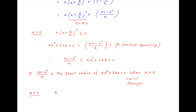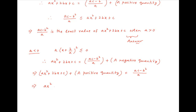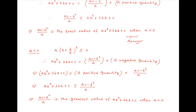This implies that a times x plus b upon a whole square is less than or equal to 0. And therefore the expression ax squared plus 2bx plus c can be expressed as ac minus b squared upon a plus a negative quantity. This implies that ax squared plus 2bx plus c plus a positive quantity is equal to ac minus b squared upon a. And this means that ax squared plus 2bx plus c is always less than or equal to ac minus b squared upon a, which implies that ac minus b squared upon a is the greatest value of the expression ax squared plus 2bx plus c when a is less than 0. And this completes the proof of the second part of the problem.